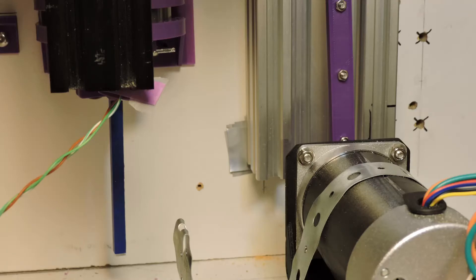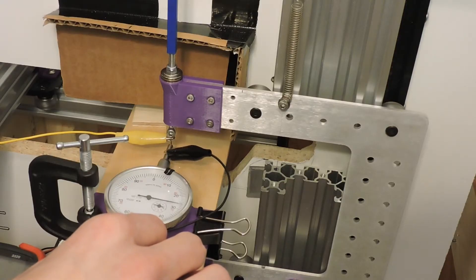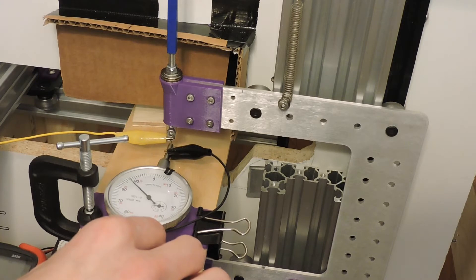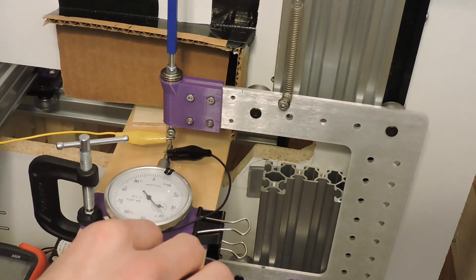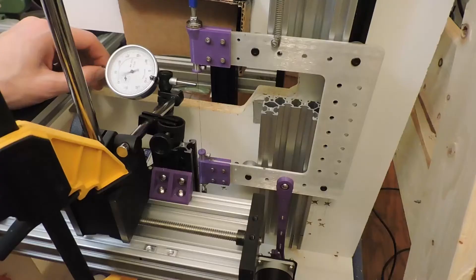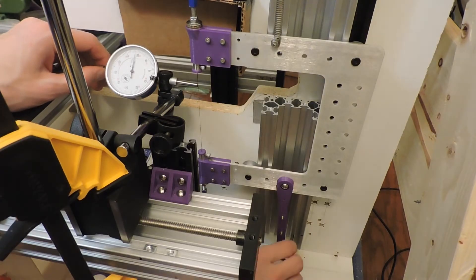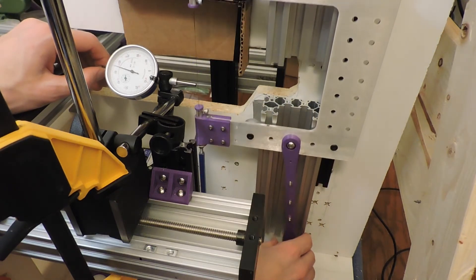And then here I'm using a continuity tester to get a much more accurate reading since the spring force from this dial indicator will move the blade. And I also measured from the other direction but that was not as much of an issue.